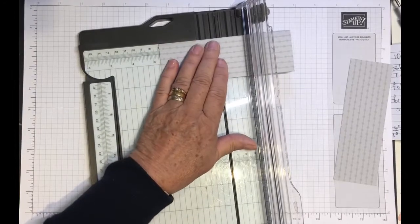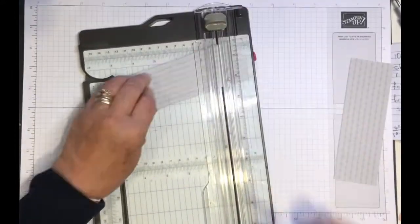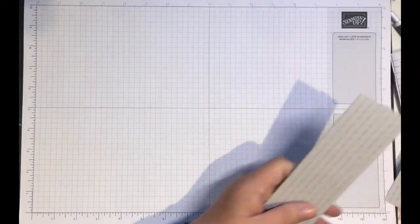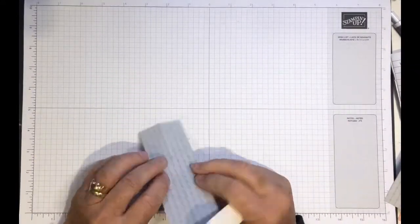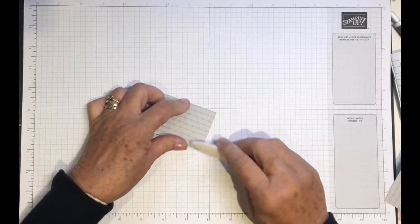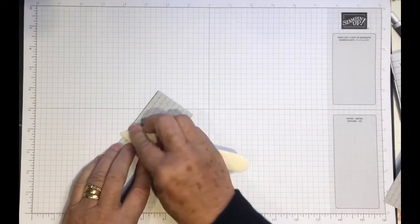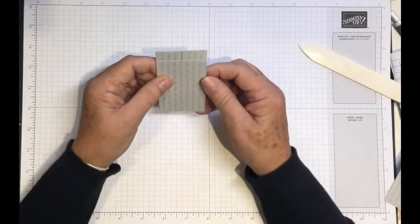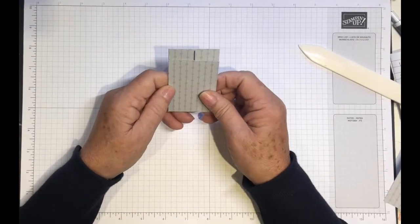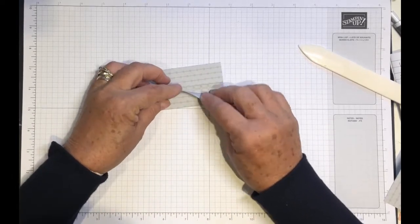Then just pop it back in the trimmer and we're going to score at two and three fourths inch. Just give it a couple of scores up and down because we're going through double paper here and then burnish that well.